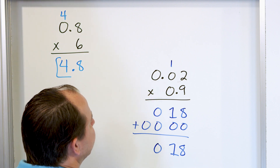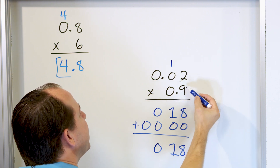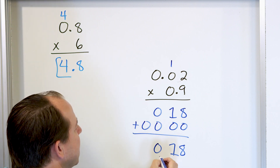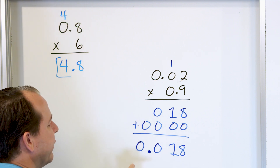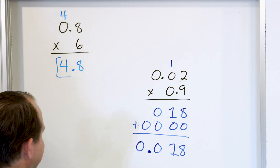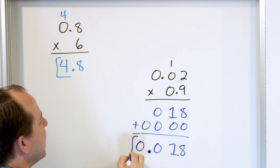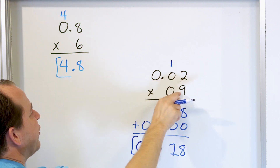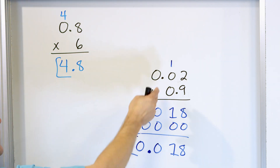Now, when we find out where to put the decimal, we say there's a decimal here with two digits after it, and another decimal here with one digit after it. So there's a total of three digits after my decimal. I must have three digits after my decimal in my answer. The final answer is 0.018. Notice I have three digits after my decimal in my answer, and I have three digits total after the decimal in my problem as well.